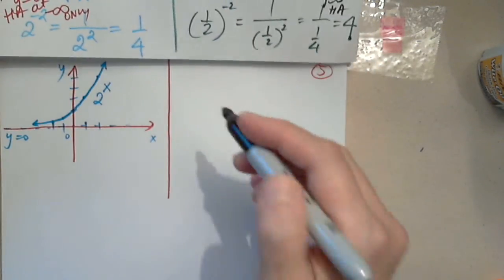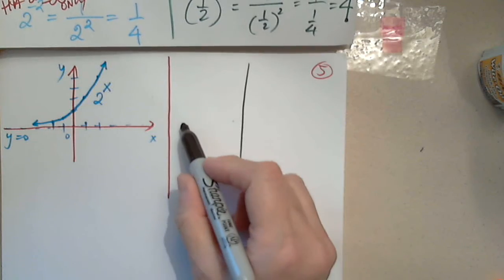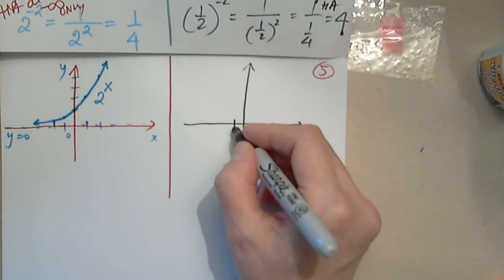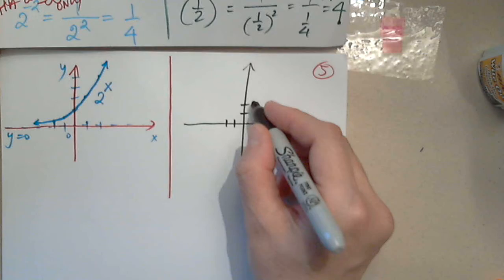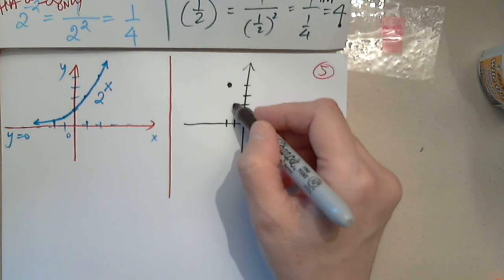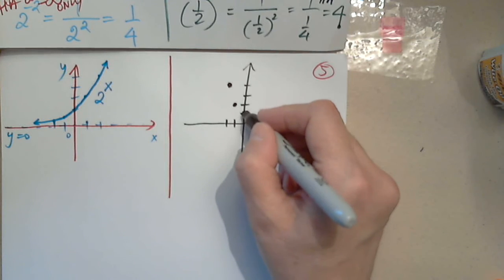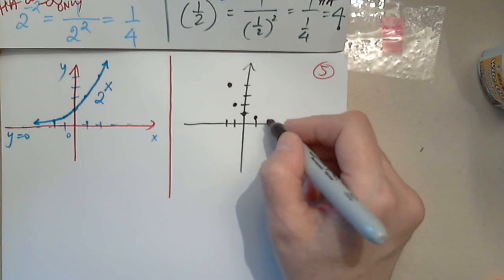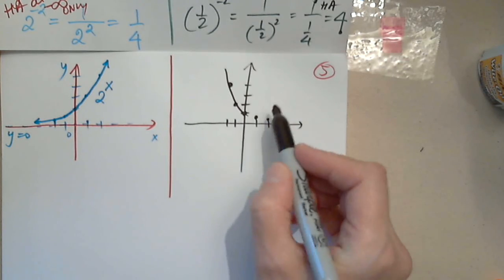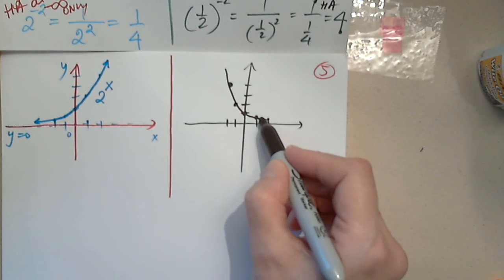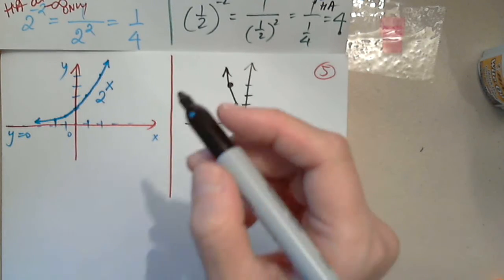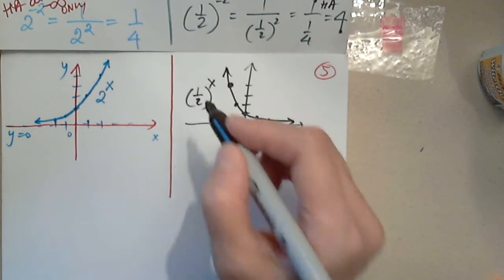Let's graph this shape side by side so we can compare. At x = −2 we get 4, at x = −1 we get 2, at x = 0 we get 1, and at x = 1 we get 1/2. This is the graph of (1/2)^x.